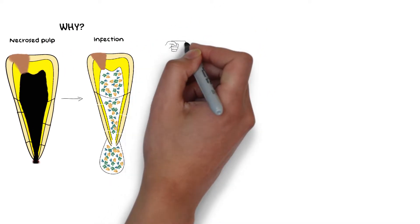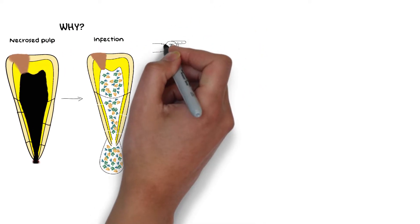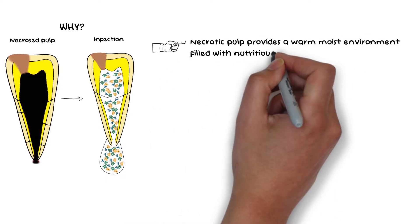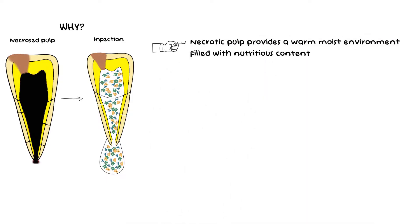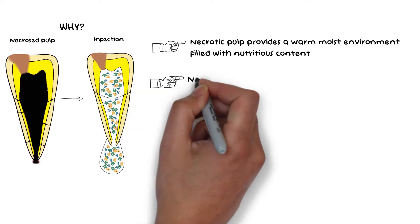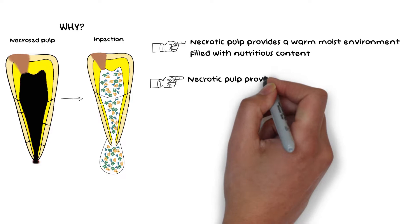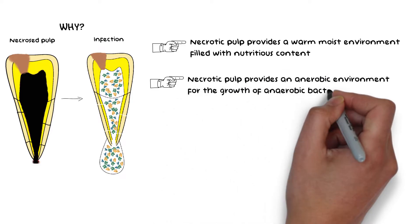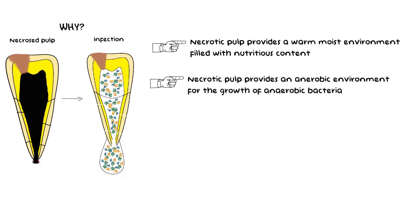First, the necrotic pulp provides a warm, moist environment that is filled with nutritious contents that the bacteria can feed upon and multiply. Secondly, because of the necrosis of the pulp, the oxygen supply to the pulp is cut off, and hence the necrotic pulp provides a very favorable anaerobic environment for the growth of anaerobic bacteria.